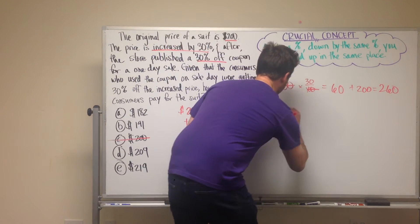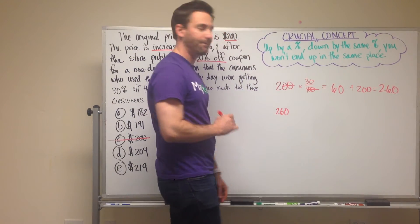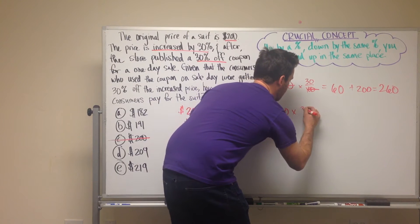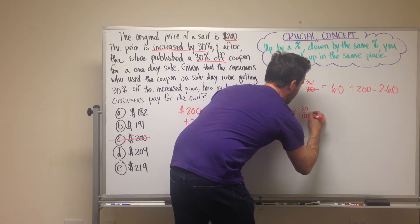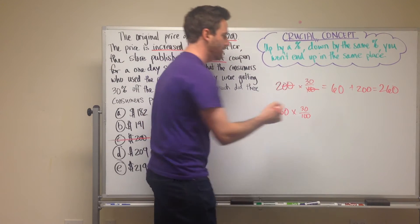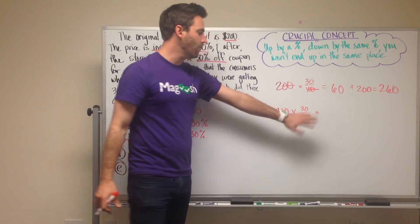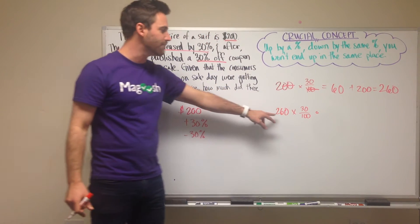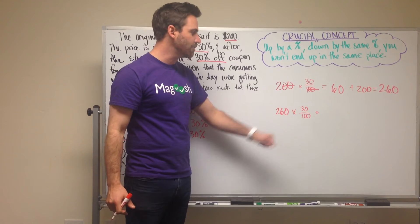So now I'm going to take the 260 here, multiply it again by 30%, or 30 over 100, and then whatever the answer is here, I'm going to subtract that from 260.